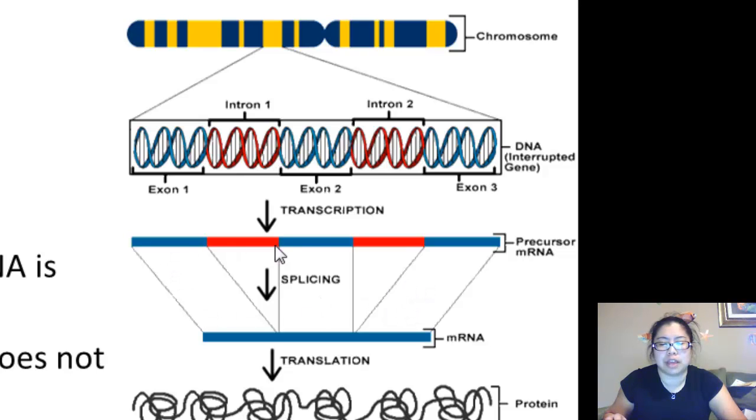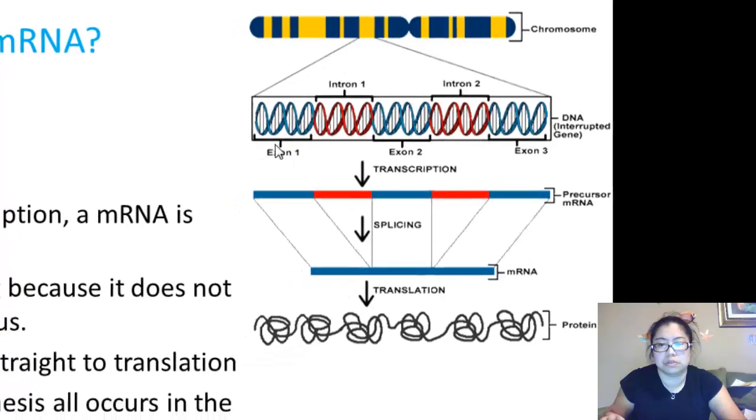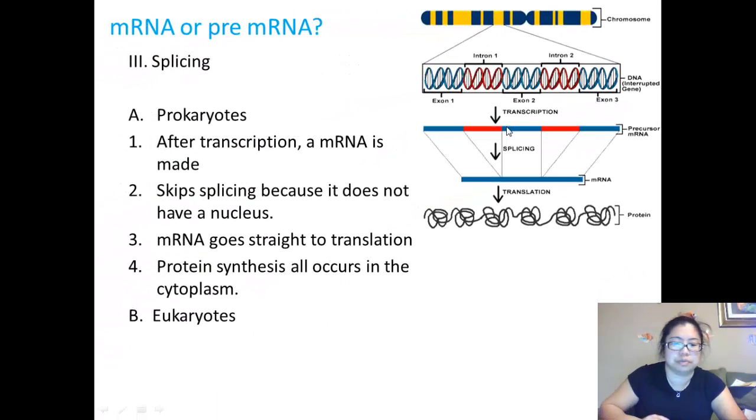The pre-mRNA has two components: exons, which are in blue, and introns, which are in red. The introns go through splicing, which leaves the exons, the coding regions of the mRNA. Then later it's translated to protein. So now we're going to focus on the eukaryotic process of splicing since prokaryotes don't go through this.